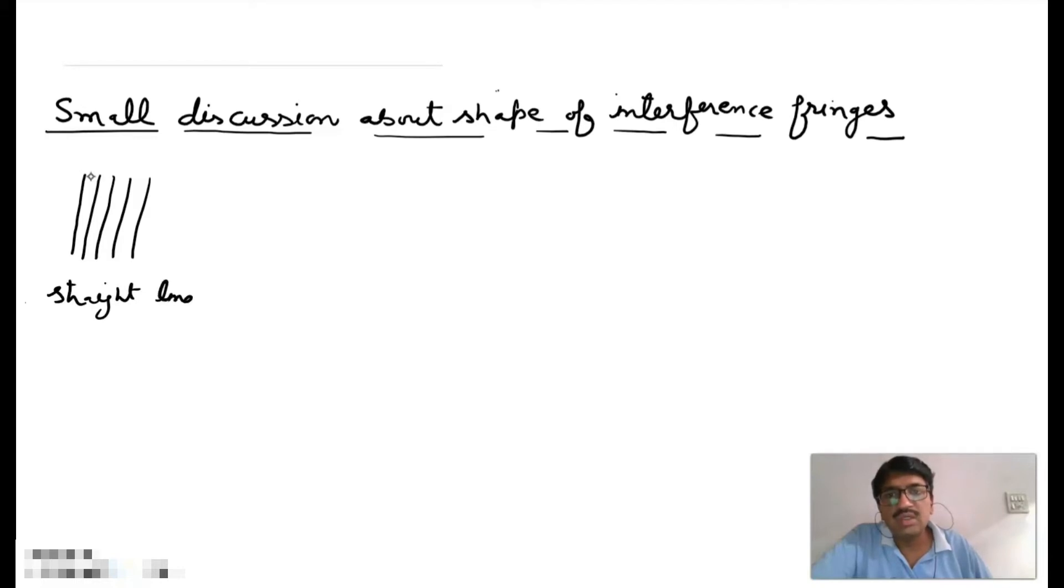These are the shapes of fringes and we can see if it is bright, dark, bright, dark.